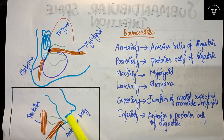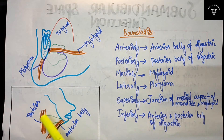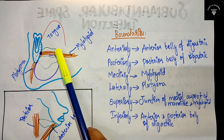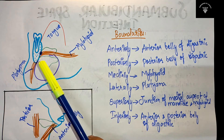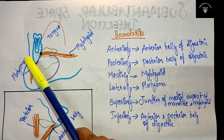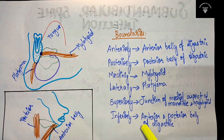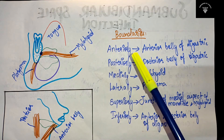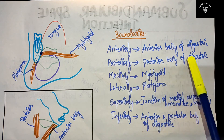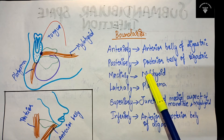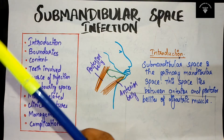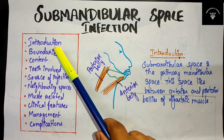To summarize the boundaries: anteriorly — anterior belly of digastric; posteriorly — posterior belly of digastric; medially — mylohyoid; laterally — platysma; superiorly — the junction of the medial aspect of the mandible and mylohyoid; inferiorly — anterior and posterior belly of digastric. A helpful memory trick: anteriorly starts with 'anterior', posteriorly starts with 'posterior', medially — mylohyoid — both start with M, and laterally — platysma — L.